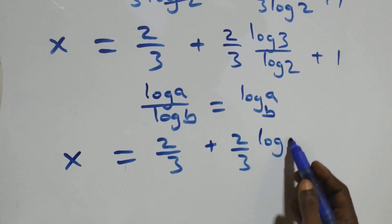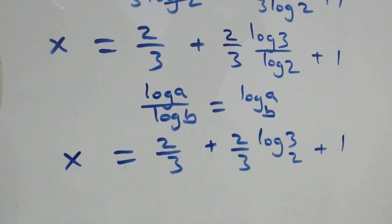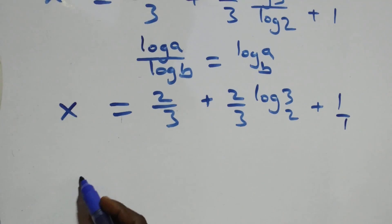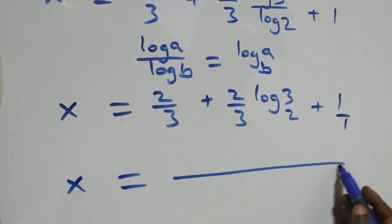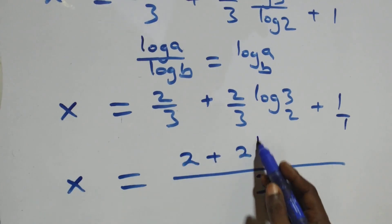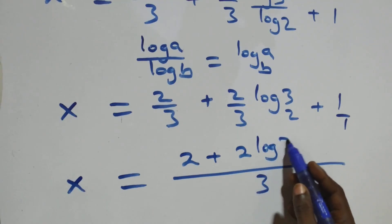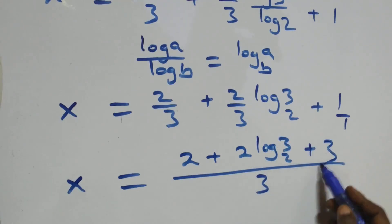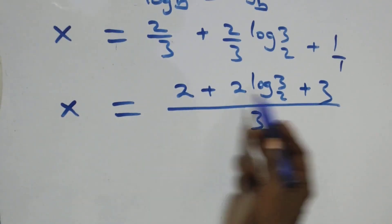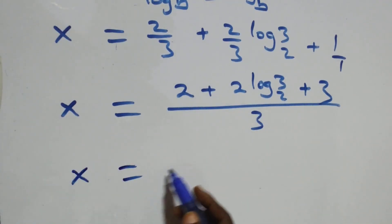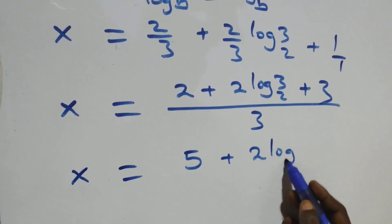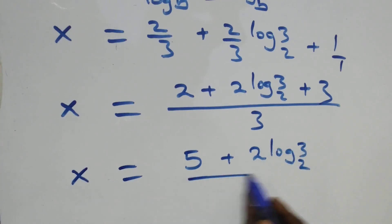Bringing the terms together: x equals 2/3 plus (2/3) log₂3 plus 1. Combining the constant terms 2 and 3 in the numerator gives 5, and we have x equals (5 plus 2 log₂3) all over 3. Therefore the value of x is (5 + 2 log₂3) / 3.